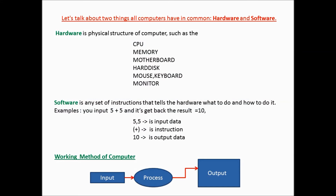Let's talk about two things all computers have in common: hardware and software. Hardware is the physical structure of a computer, such as the CPU, memory, motherboard, hard disk, mouse, keyboard, and monitor. Software is any set of instructions that tells the hardware what to do and how to do it. For example, you input 5 plus 5 and it gives back the result equals 10. Here, 5 is input data, plus is the instruction, and 10 is output data. The working method of a computer: input, process, output.